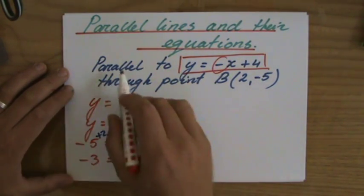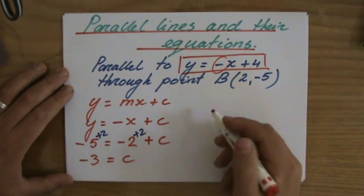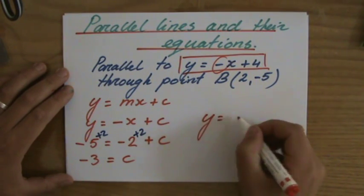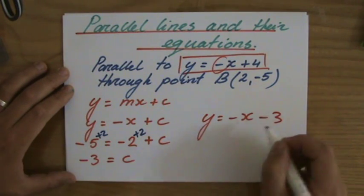So what does the equation look like which is parallel to that line and goes through point B? That's going to be y equals minus x minus 3.